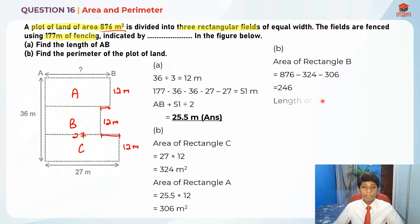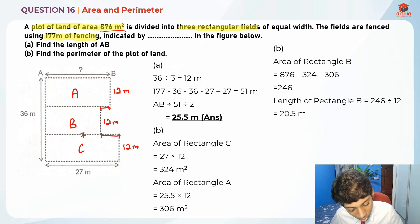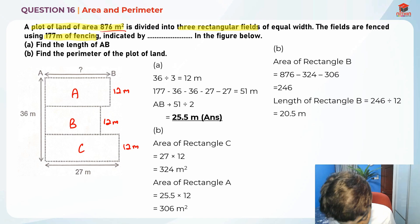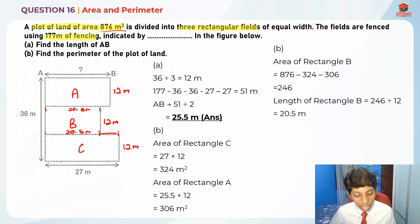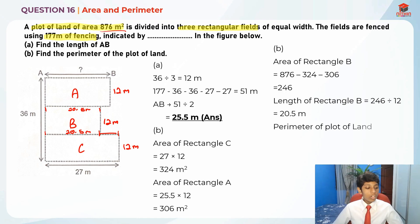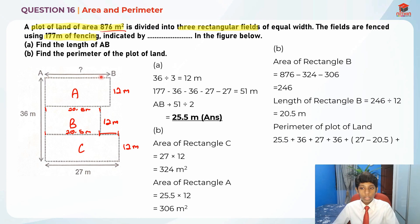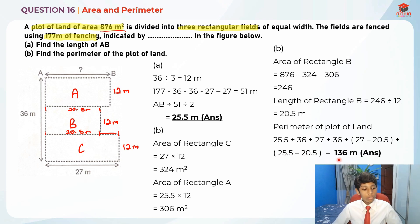To find the length of rectangle B, we take 246 ÷ 12 = 20.5 meters. So the length of B is 20.5 meters. Now, the perimeter of the plot of land is: 25.5 + 36 + 27 + 36 + (27 − 20.5) + (25.5 − 20.5) = 136 meters.